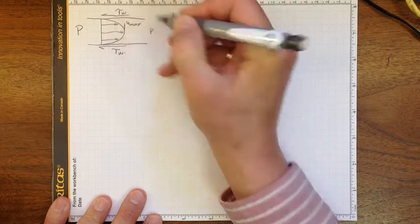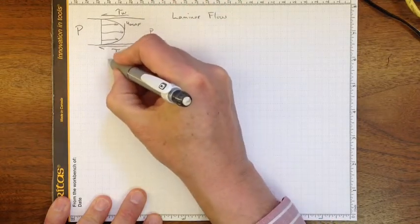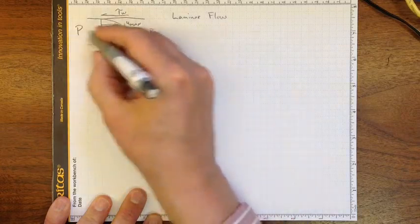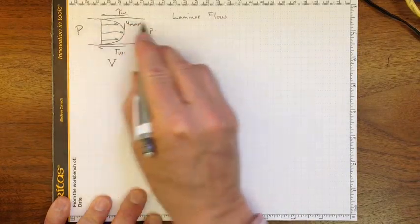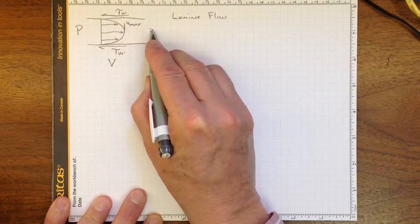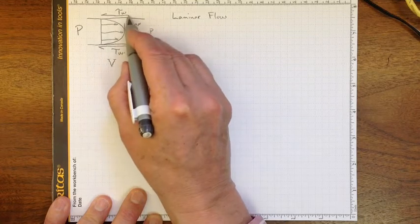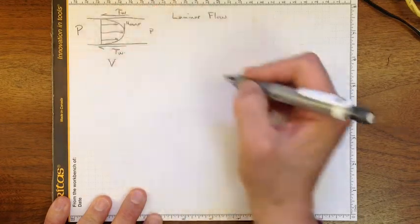the average velocity V, the pressure drop, because there's going to be a higher pressure here than a lower pressure here, and that needs to balance out the shear stress acting in the opposite direction.